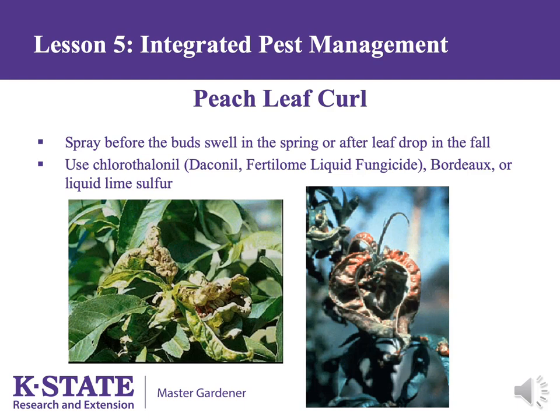Peach leaf curl is a disease that can weaken peach trees due to leaf damage, causing leaves to pucker and swell. Unfortunately, by the time you see symptoms, fungicides do not work. Fungicides must be applied much earlier in the spring, before bud swell — usually in March in Kansas, but possibly as early as February in an early spring. Effective fungicides include chlorothalonil, Bordeaux mixture, and liquid lime sulfur, though the latter two may be difficult to find.